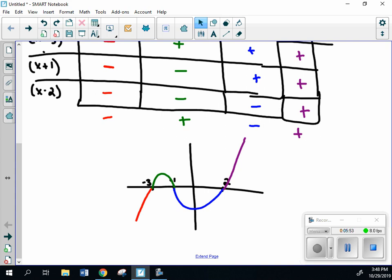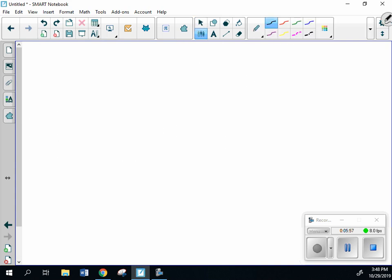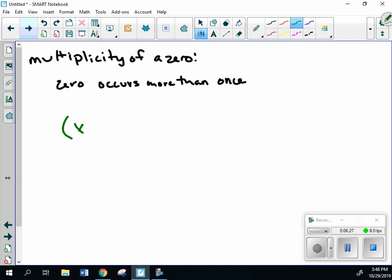Now, the next thing is you could have what is called a multiplicity. What does this mean? This means that the zero occurs more than once. If I were to have x plus 3 squared, this means that I have a multiplicity of 2. So what that really means is x equals negative 3 occurs twice because of that exponent. Now, whatever that exponent is, is your multiplicity. That tells you how many times it's going to occur.